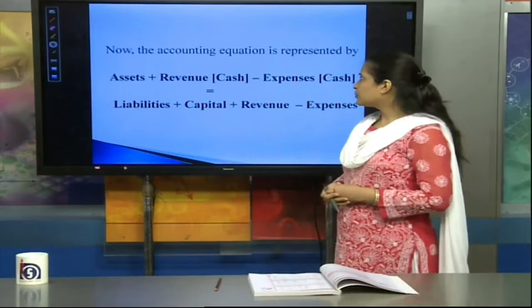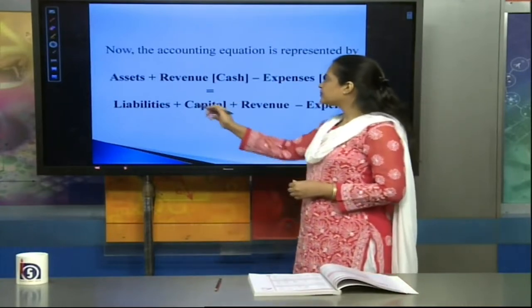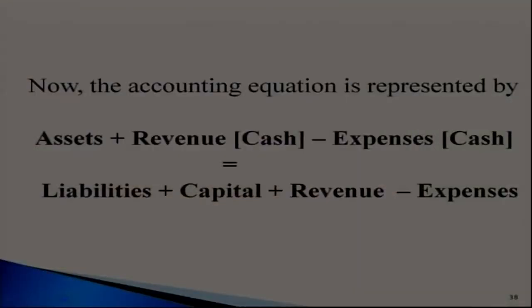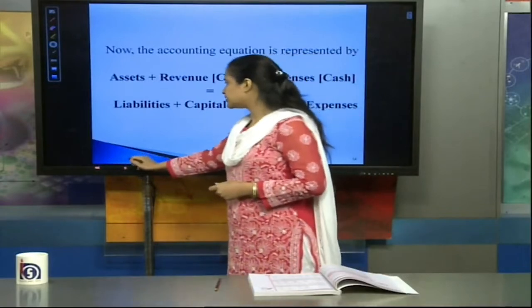So now the accounting equation: you can take assets — the cash you have — and subtract expenses. On the liability side, there are also liabilities plus capital, because this was already existing: Assets = Liabilities + Capital. This equation already exists. What we have added to this is revenue and expenses on both sides. So this is the only change that you see here.